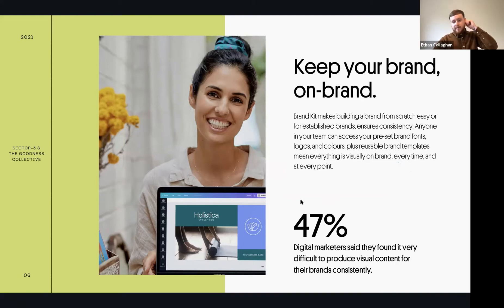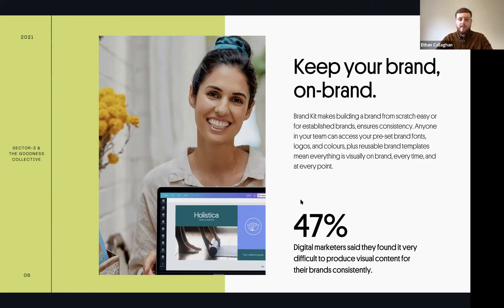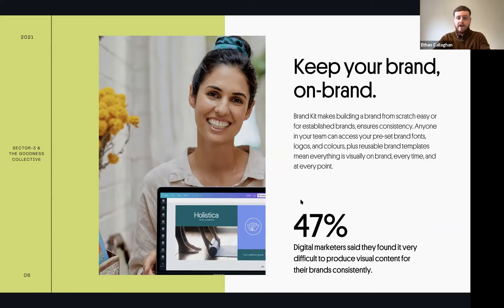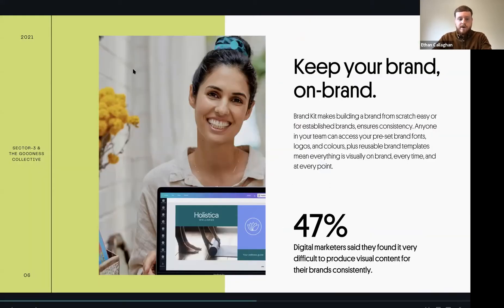47% of digital marketers find it difficult to create consistent visual content. On social media today you have a matter of seconds to capture someone's attention. If people scroll through Instagram or Facebook and recognize your colors and style, they think 'that's the Goodness Collective - they gave us valuable information last time' - and being consistent is a really easy way to get people engaged quickly.